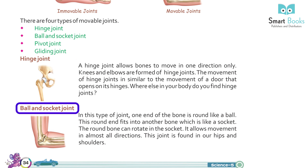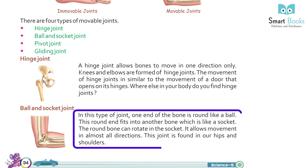Ball and socket joint: in this type of joint, one end of the bone is round like a ball. This round end fits into another bone which is like a socket. It allows movement in almost all directions. This joint is found in our hips and shoulders.